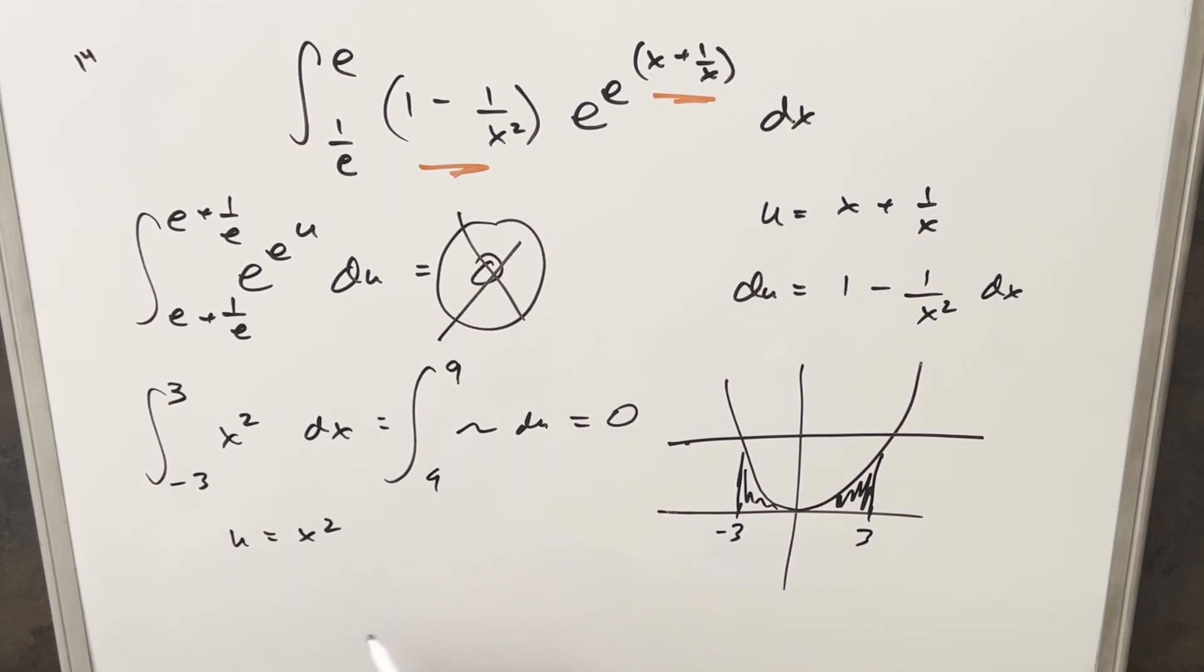You also will see this problem a lot with sine and cosine, like the sine curve. Clearly it doesn't pass the horizontal line test because it's going to be intersected at multiple points.